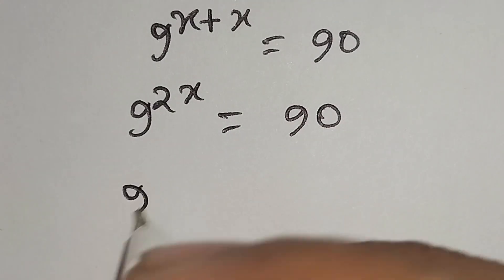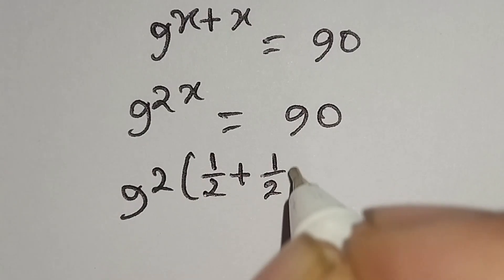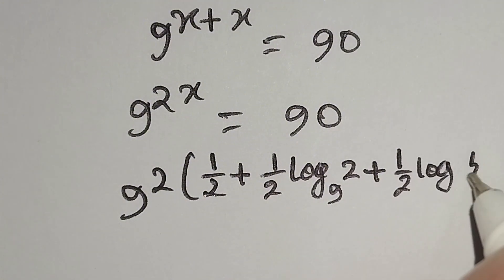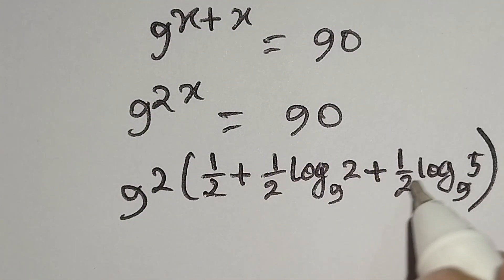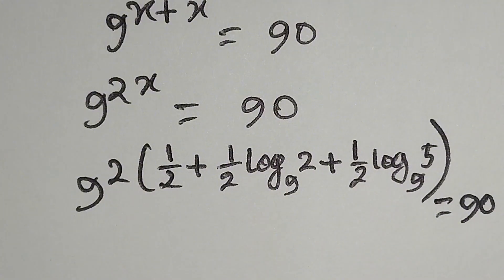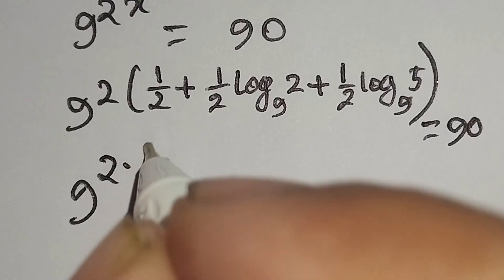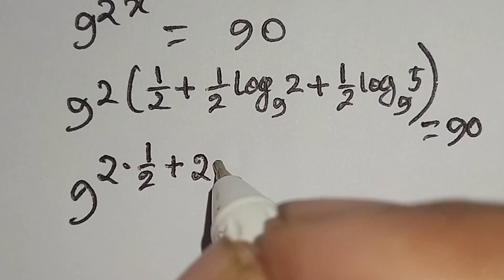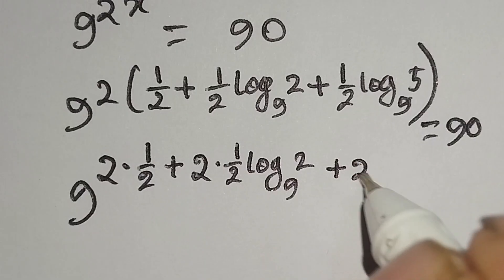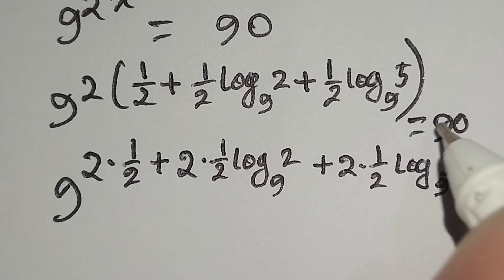Here 9 to the power 2 times x, substituting x equals 1 over 2 plus 1 over 2 log 2 to the base 9 plus 1 over 2 log 5 to the base 9, we get 9 to the power 2 times 1 over 2 plus 2 times 1 over 2 log 2 to the base 9 plus 2 times 1 over 2 log 5 to the base 9, equal to 90.